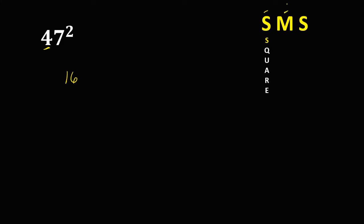Then M stands for multiply. We multiply these three numbers: 4 times 7, that's 28, and 28 times 2, that's 56. So we write 56 here.